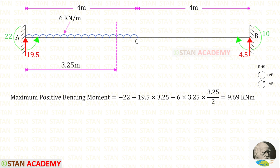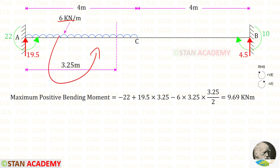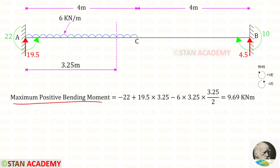Now let us find the maximum positive bending moment. MA is acting anti-clockwise so it is negative. The vertical reaction RA is acting clockwise so it is positive. For the UDL, we multiply by the distance and distance divided by 2. Finally, the maximum positive bending moment is 9.69 kNm.